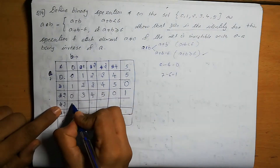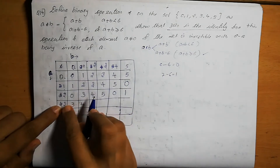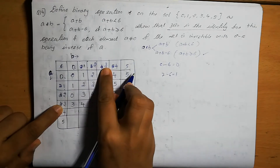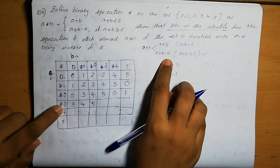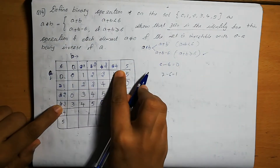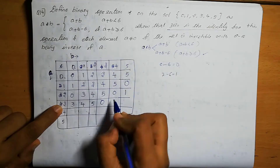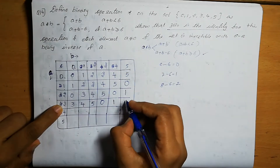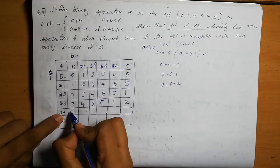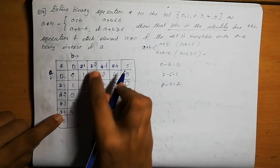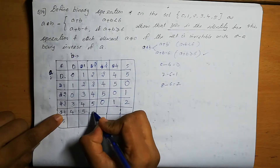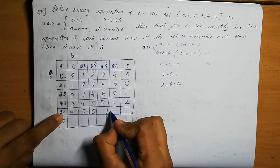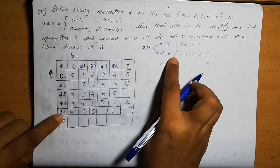Row 4: 4+0=4, 4+1=5. For 4+2=6, we write 6 minus 6 equals 0. For 4+3=7, we write 7 minus 6 equals 1. For 4+4=8, we write 8 minus 6 equals 2. For 4+5=9, we write 9 minus 6 equals 3.